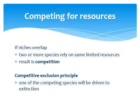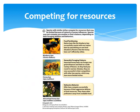When two or more species rely on the same limited resources, you get competition. This leads to what's called the competitive exclusion principle — one of the competing species will eventually be driven to extinction. Keep in mind extinction doesn't usually happen quickly; these species might coexist for quite a while, but eventually the reproductive success of the species that out-competes the other will cause that other species to go extinct.